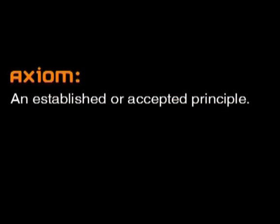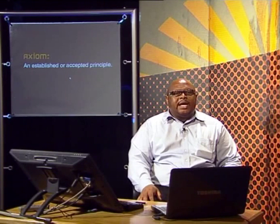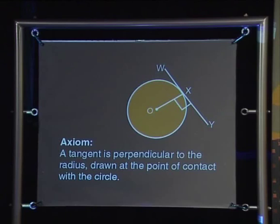An axiom is an established or accepted principle that doesn't need proving. This one is useful to us in the next theorem. A tangent is perpendicular to the radius of a circle if it is drawn at the point of contact with the circle.